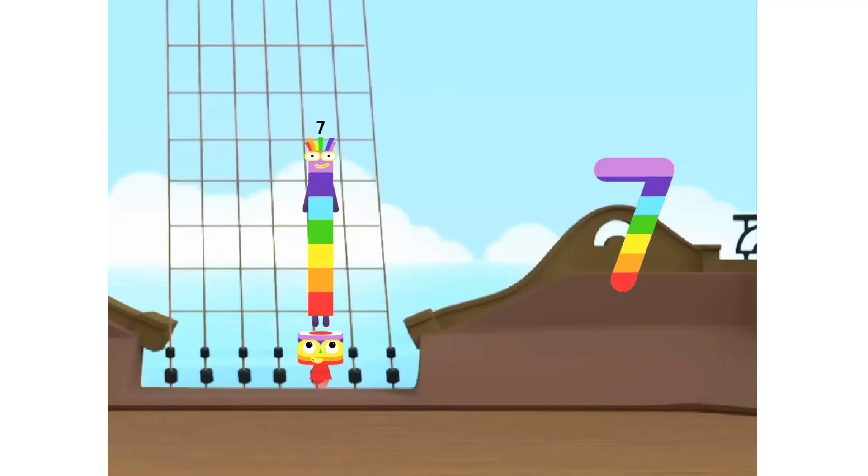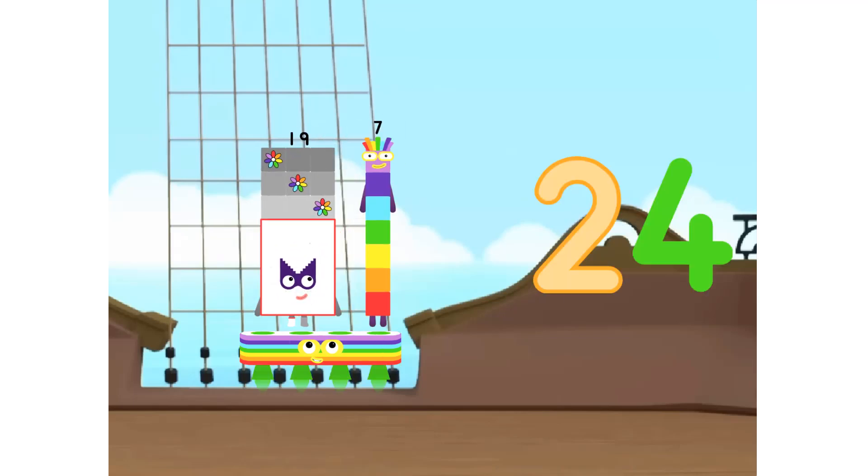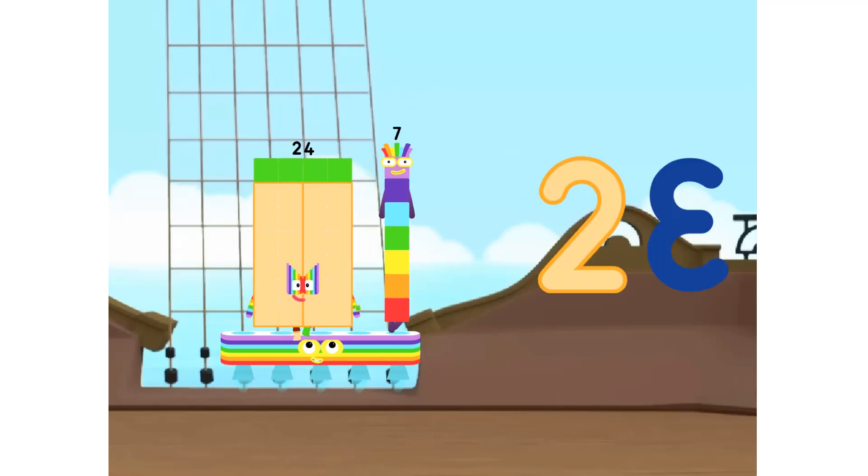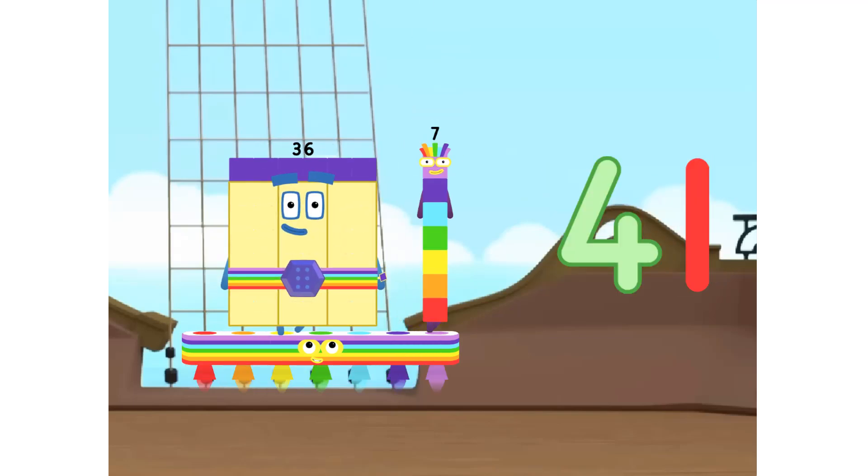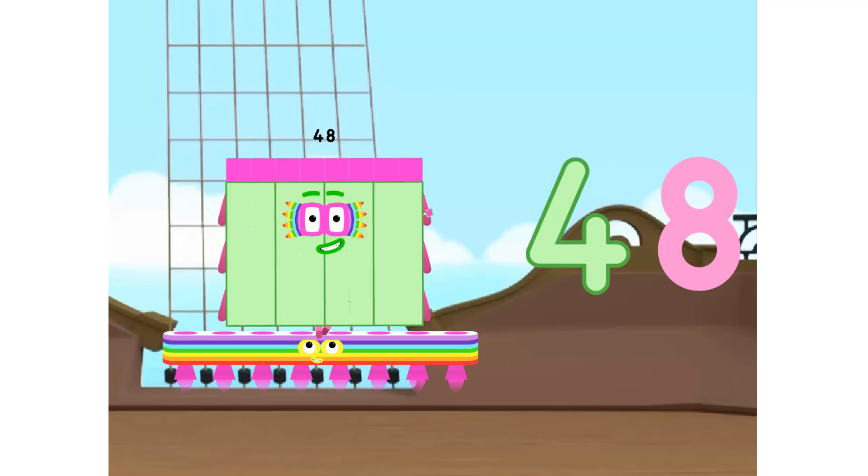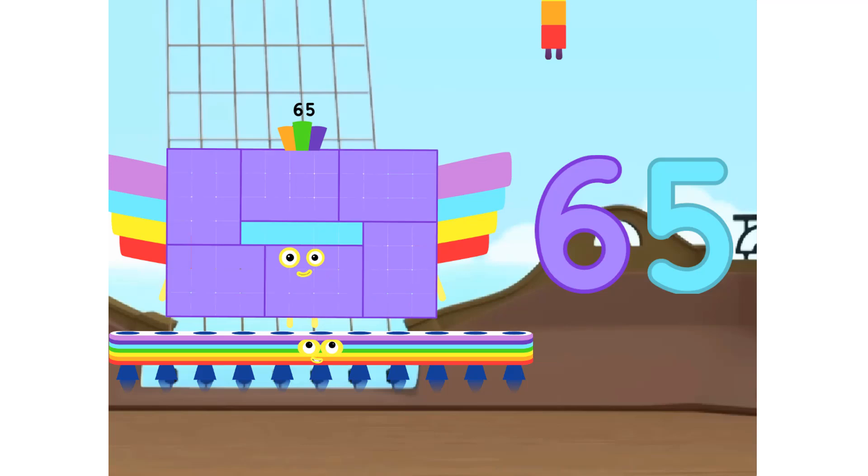1 7 is 7, 2 7s are 14, 3 7s are 21, 4 7s are 28, 5 7s are 35, 6 7s are 42, 7 7s are 49, 8 7s are 56, 9 7s are 63, 10 7s are 70.